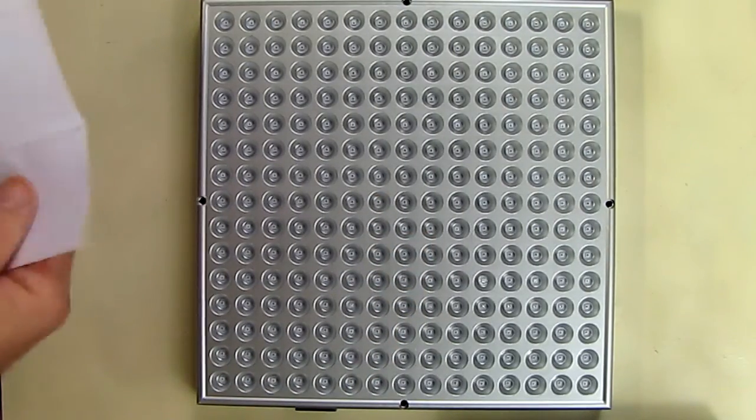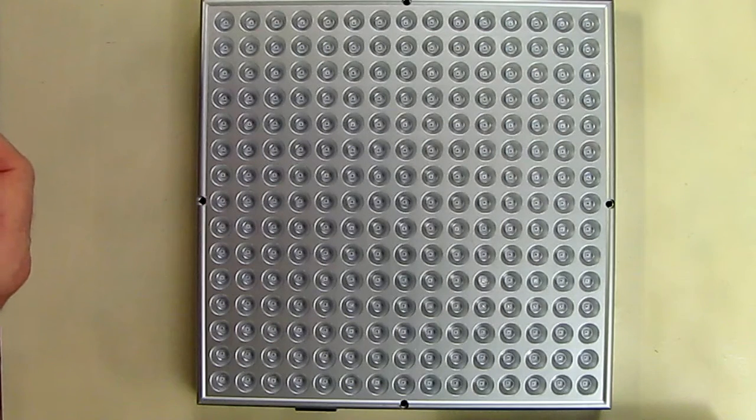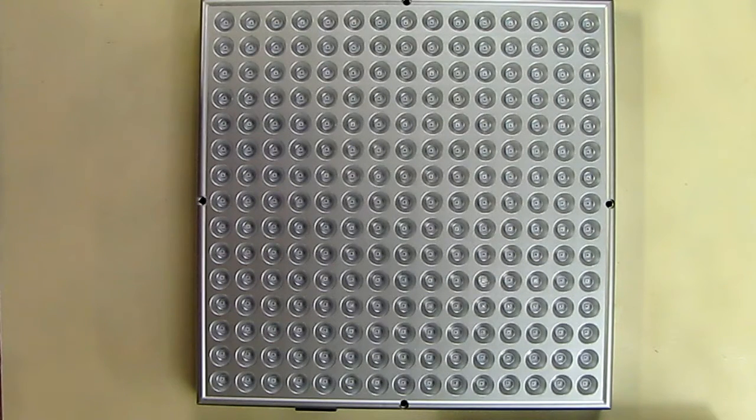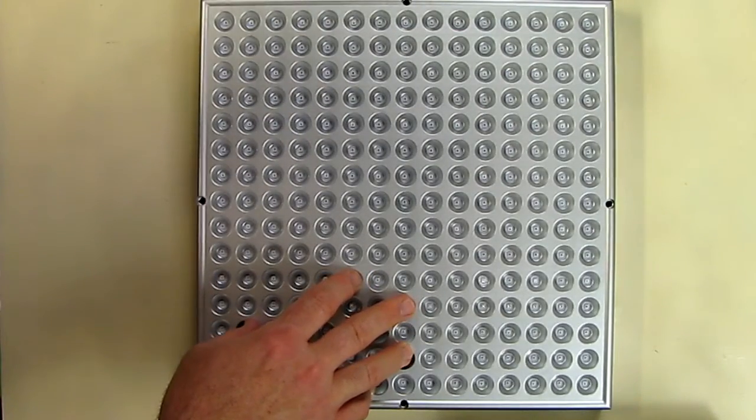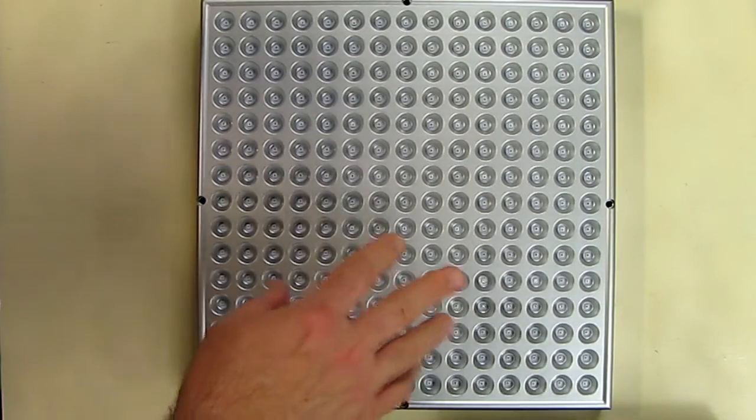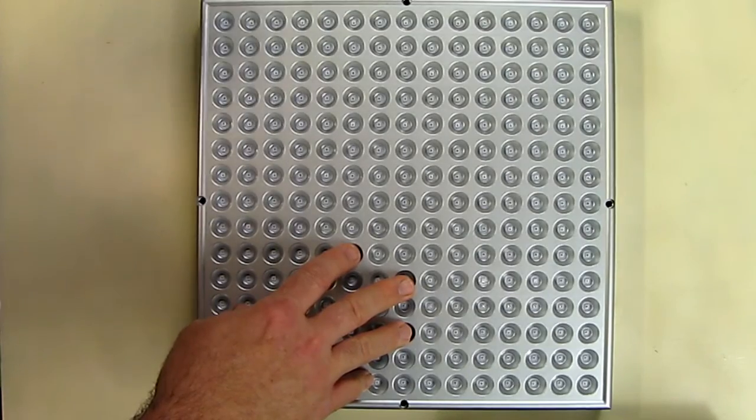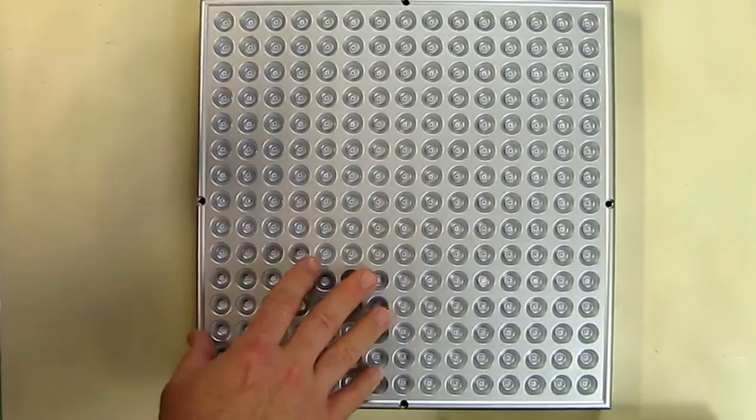In terms of specs, the model is the U11. It's got a maximum of 45 watts with 165 red LEDs and 60 blue LEDs, so it's a little more red wavelength for when it starts to flower the plant.